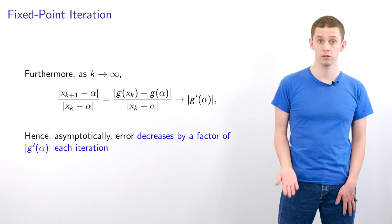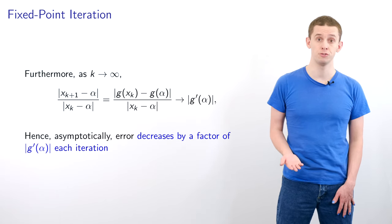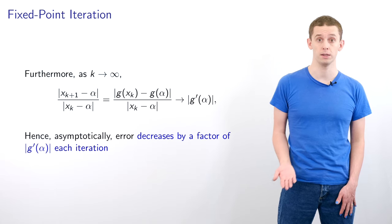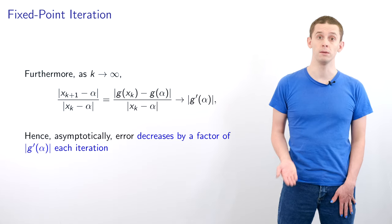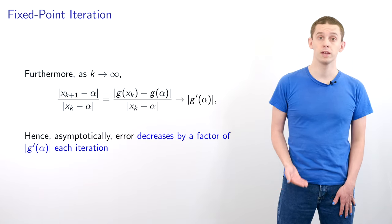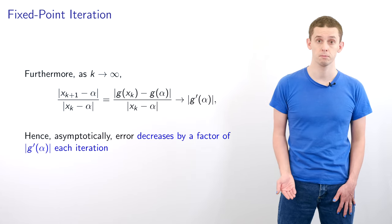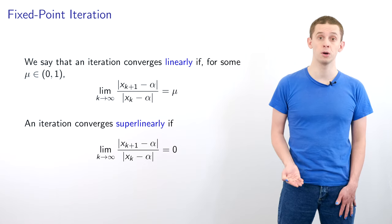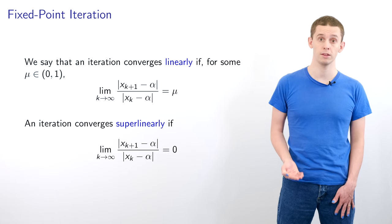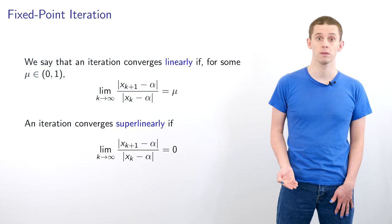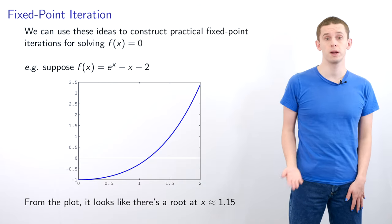Let's look at the ratio of errors between successive steps: |x_{k+1} − α| / |x_k − α| = |g(x_k) − g(α)| / |x_k − α|. This matches the definition of a derivative, so as k → ∞ it tends to |g′(α)|. Hence asymptotically the error decreases by a factor of |g′(α)| each iteration. If the limit of this ratio equals μ with 0 < μ < 1, we say the iteration converges linearly; if the limit equals 0, we say it converges superlinearly.